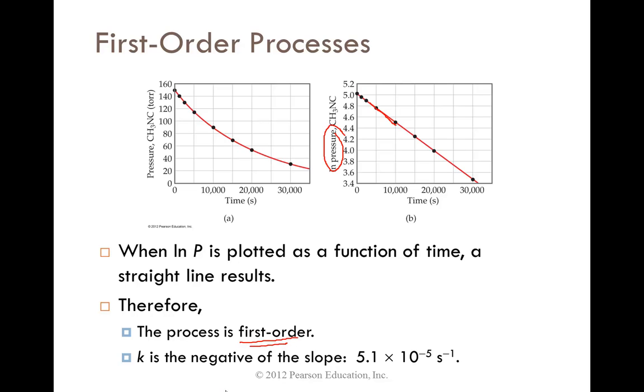K is the negative slope of 5.1 times 10 to the negative 5. So that would be the rate constant.